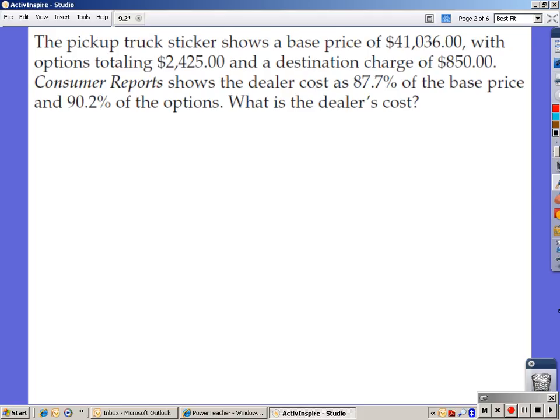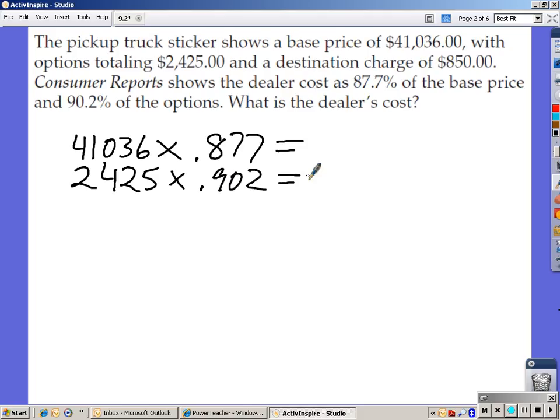In order to set this up, you have to take $41,036 times .877, and that gives you the dealer's cost portion. The options is $2,425. We've got to take that number times .902. That gives you the options portion, and then we're going to add the destination charge of $850 to the bottom. Once we have these three numbers, that gives us the dealer's cost.